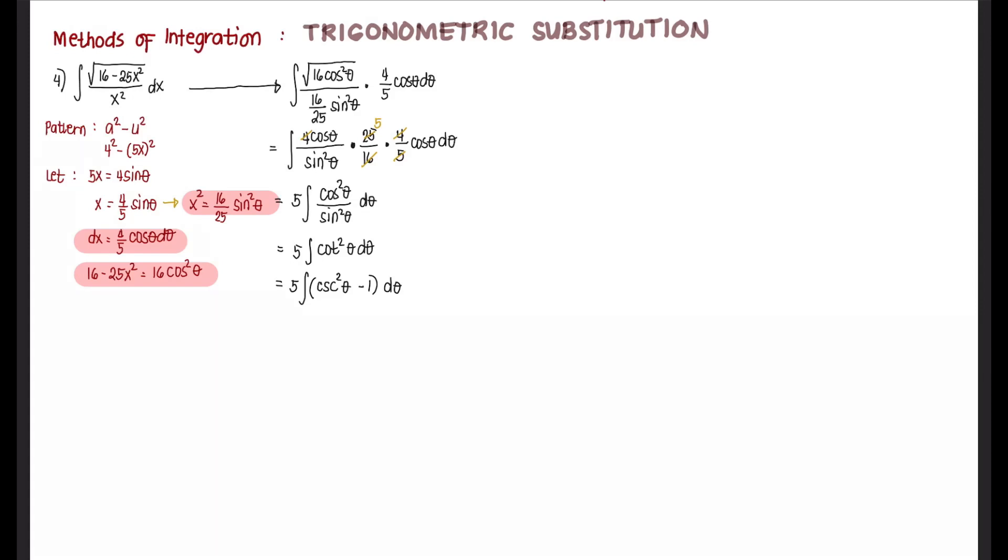Then we distribute, that's 5 integral of cosecant squared theta d theta minus 5 integral of d theta. Integrating, we have negative 5 cotangent of theta minus 5 theta plus c.